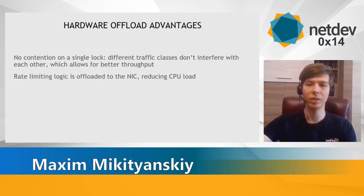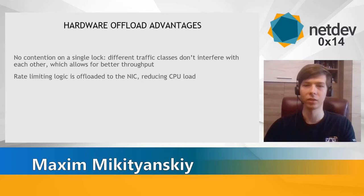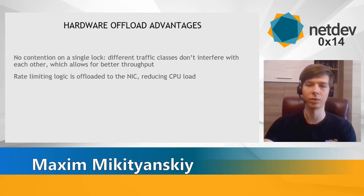We have obvious advantages with this approach. First of all, we eliminate the contention — that single lock that was mentioned before, we don't need to take it anymore. The traffic classes don't interfere with each other, which allows for better throughput and the ability to scale well by increasing the number of TXQs and traffic classes. Another advantage is that we don't run the algorithm on the CPU, reducing CPU load and offloading that mechanism to the hardware, to the NIC.